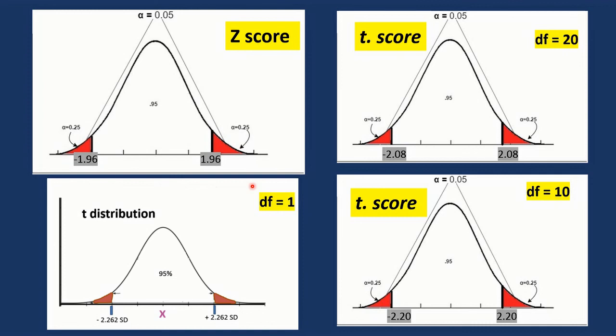If the sample size is 21, so the degree of freedom is 20. The 95 area, the limits from minus 2.08 to plus 2.08.